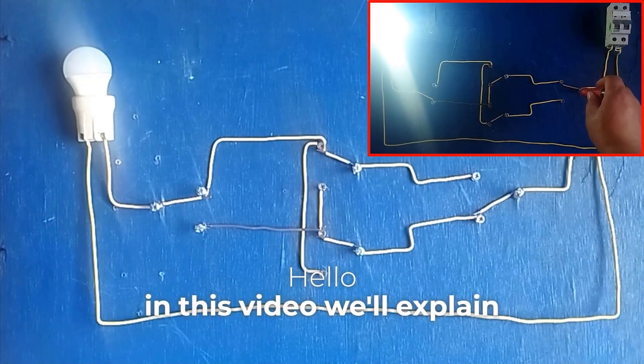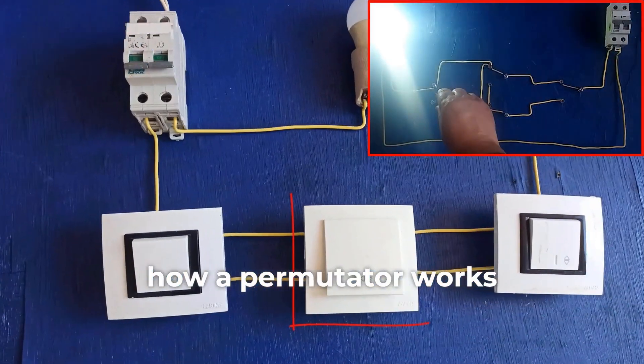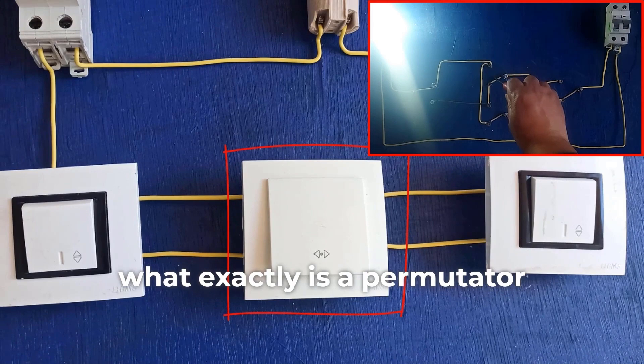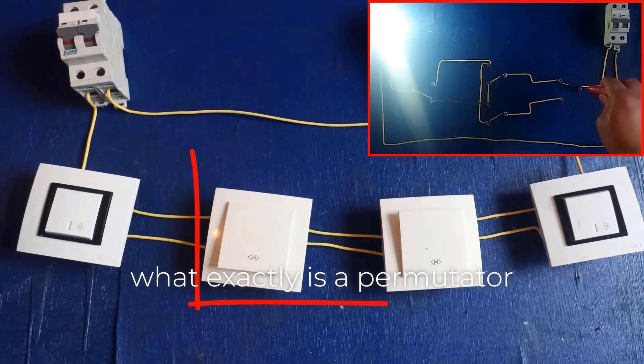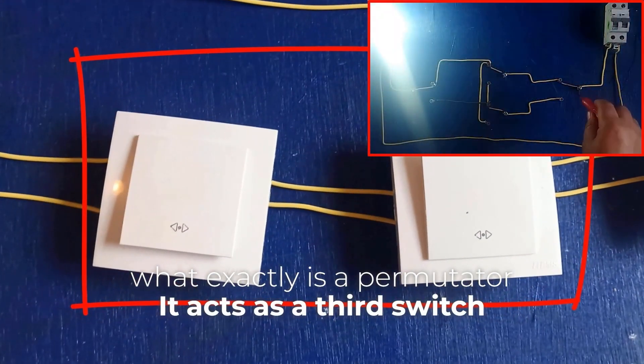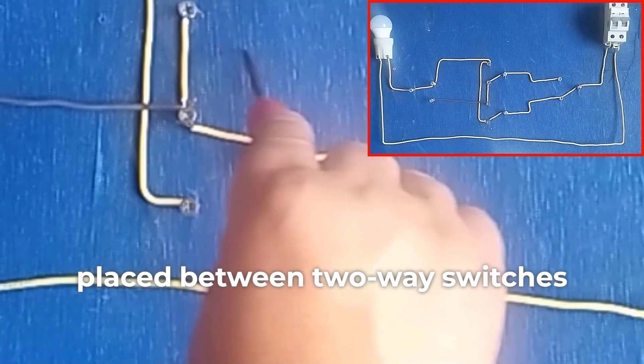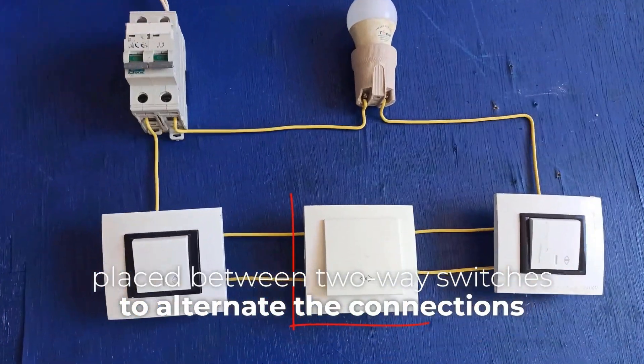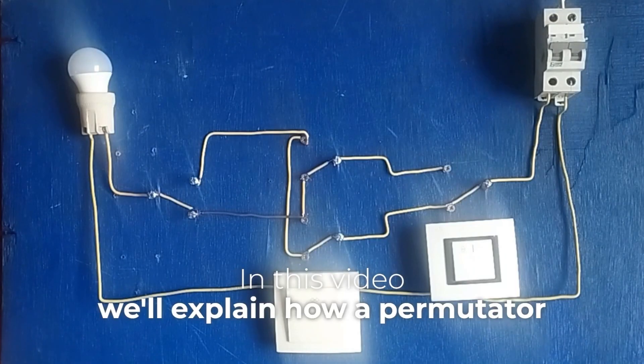Hello, in this video we'll explain how a permutator works. First off, what exactly is a permutator? It acts as a third switch placed between two-way switches to alternate the connection.